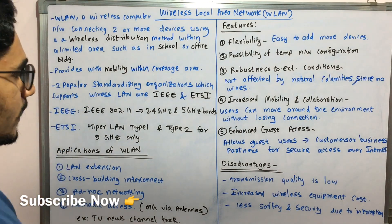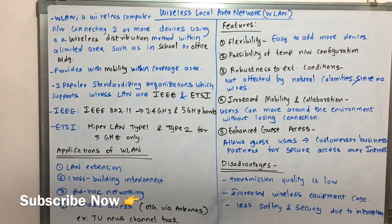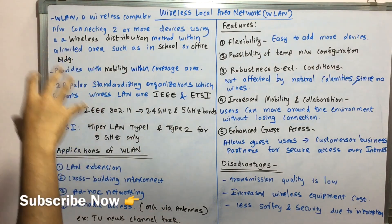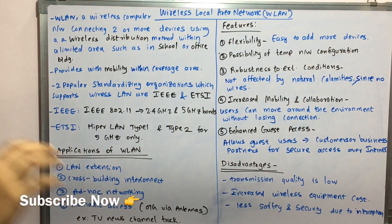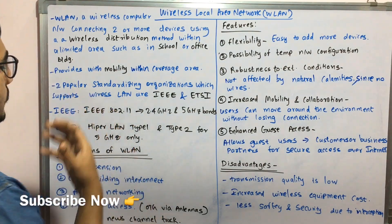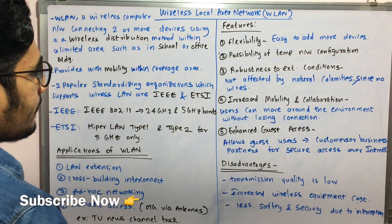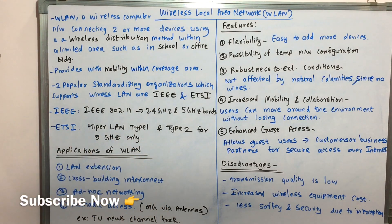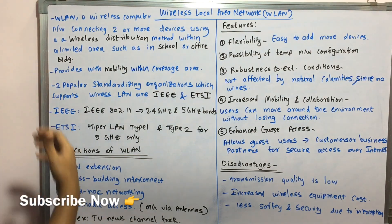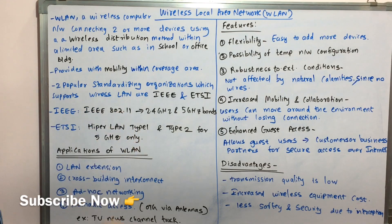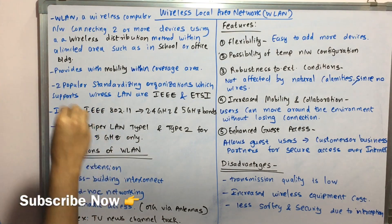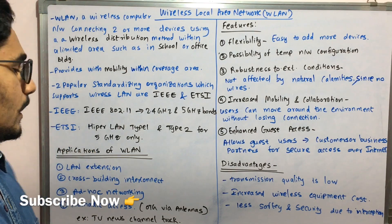There are two popular standardizing organizations for WLAN: IEEE, that is International Electrical and Electronics Engineers, and ETSI, that is European Telecommunication Standards Institute. These two are the prime major organizations revolving around WLAN and each has its own standard. The IEEE standard is IEEE 802.11, which provides 2.4 GHz as well as 5 GHz bands for WLAN equipment. ETSI has Hyperlan Type 1 and Type 2, both operating only on the 5 GHz frequency band.